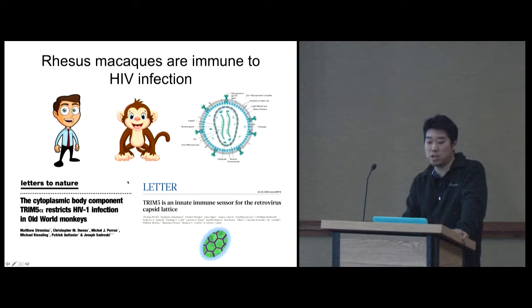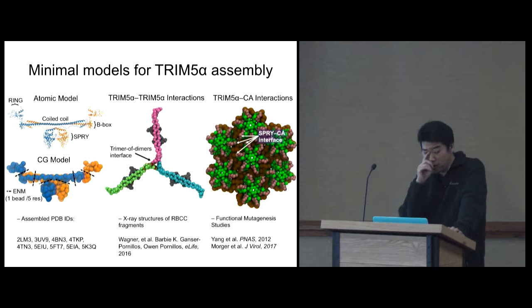So as some of you might know, rhesus macaques are immune to HIV infection, whereas humans are not. And in 2004, Stremlau and coworkers found that this cytoplasmic protein called TRIM5α is responsible for conferring immunity to rhesus macaques for HIV infection. The TRIM5α protein is an innate immune sensor that recognizes the retroviral capsid lattice, and as I mentioned before, it forms these hexagonal pattern structures on the viral capsid surface.